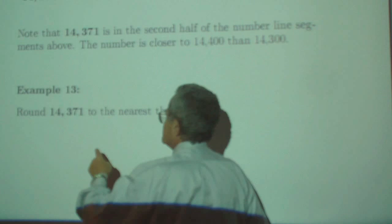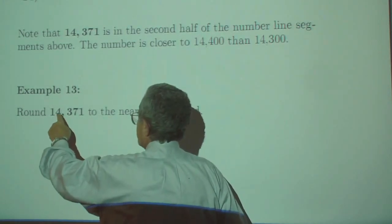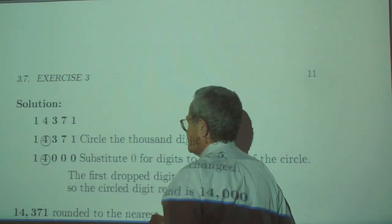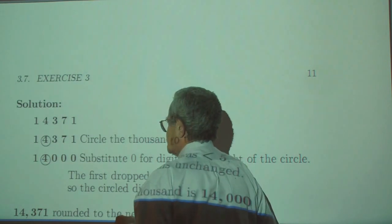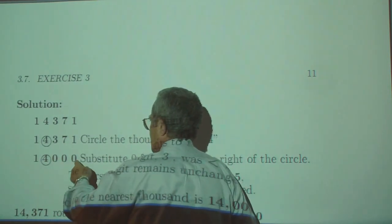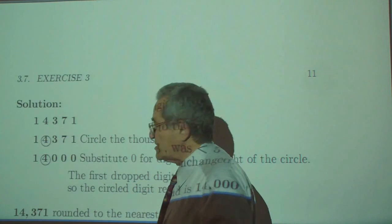Now, suppose we rounded this to the nearest thousand. The 4 is the thousand. Circle the thousand position. Replace all the numbers below, the digits below by zeros.